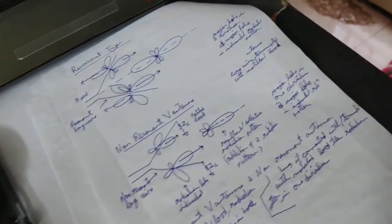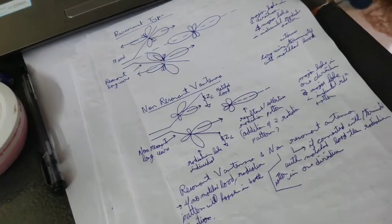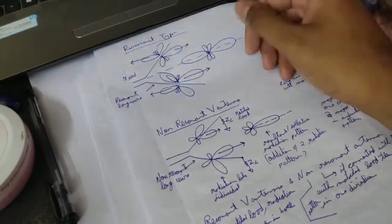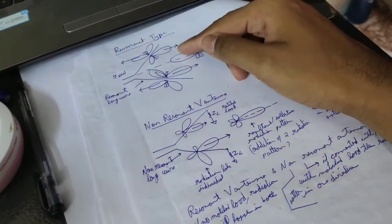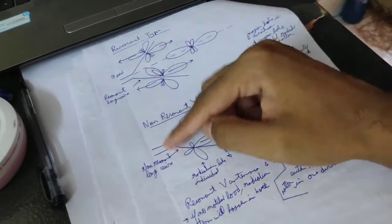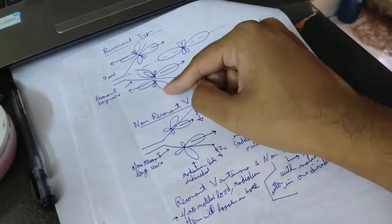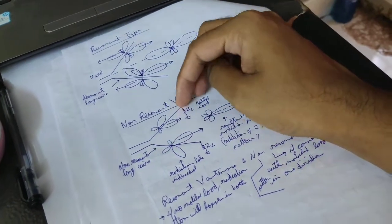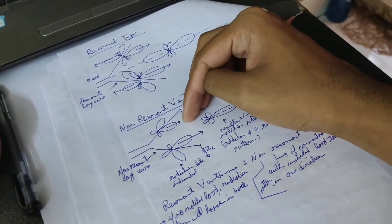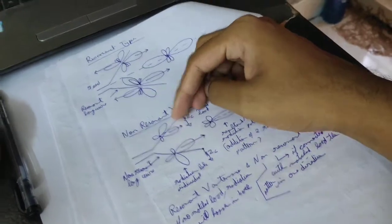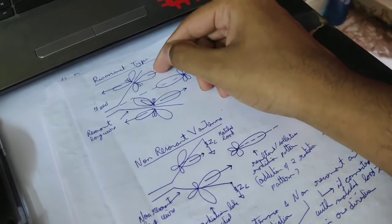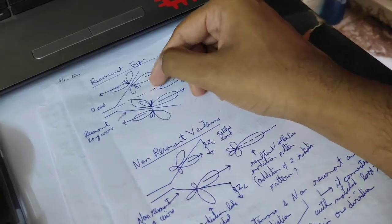Please don't get confused with resonant and non-resonant V antenna — it's very easy to understand. For the non-resonant V antenna, there will be a matched load. Both structures are the same, but at the end of the non-resonant antenna, it is terminated with a matched load. In the resonant antenna, there is no matched load.